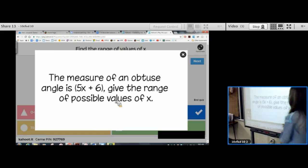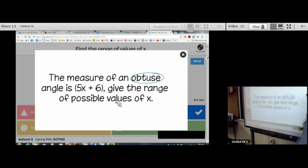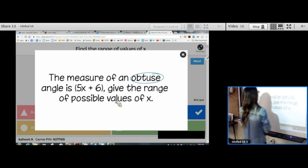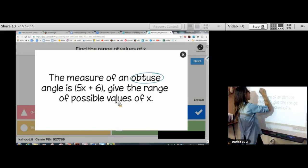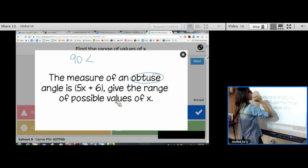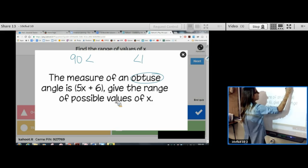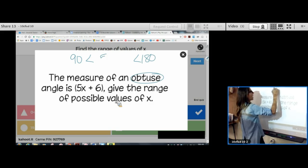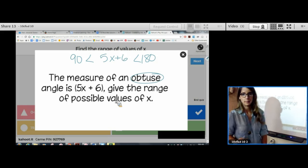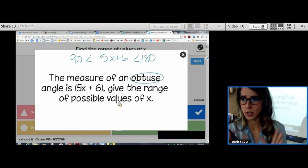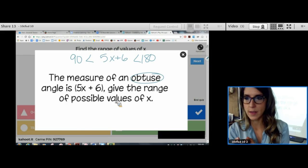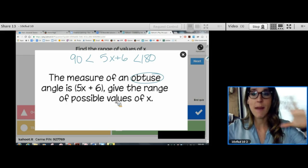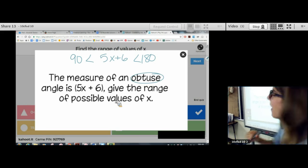So, the measure of an obtuse angle is 5x plus 6. Give the range of possible values of x. Okay. So, we know obtuse. We know that obtuse angles have to be greater than 90, but in this class, we don't go past 180. So, less than 180. So, we put our angle in there. That is step one. You'll see it tomorrow. Make sure you know how to do this. You put the angle in the middle, and then you write the min and the max that the angle could be. The min and the max.